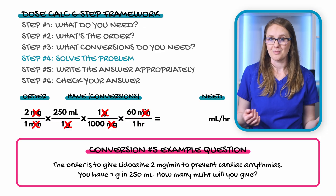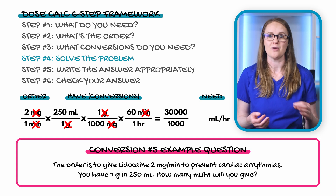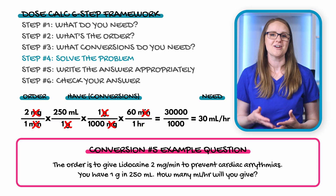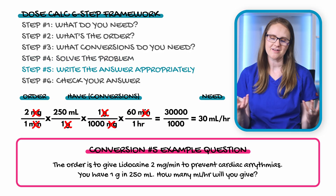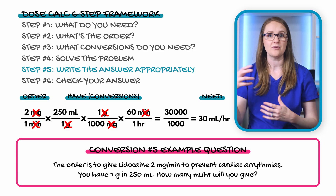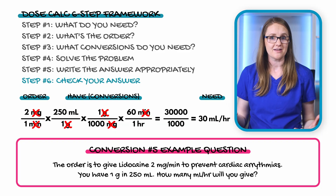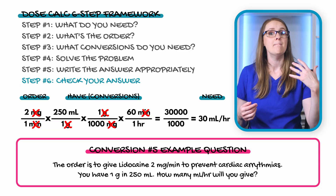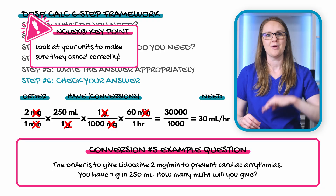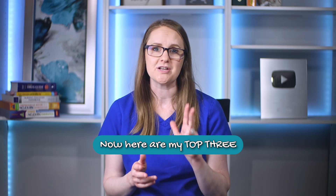Step four: multiply across the top, multiply across the bottom, and divide. 2 × 250 × 1 × 60 = 30,000; 1 × 1 × 1,000 × 1 = 1,000; 30,000 ÷ 1,000 = 30. Step five: the answer is 30 milliliters per hour — no rounding needed. Step six: double-check that units cancel correctly. Milligrams cancel out, minutes cancel out, and you end up with milliliters per hour. This is the NCLEX critical thinking point — verify your units cancel correctly every time.